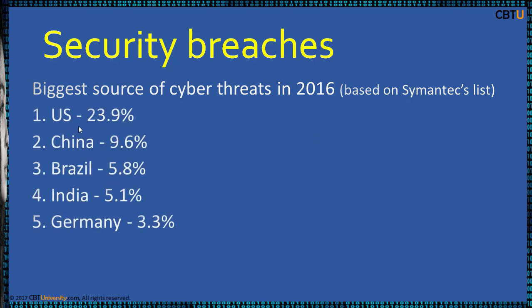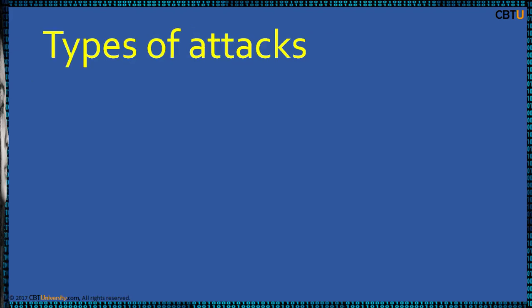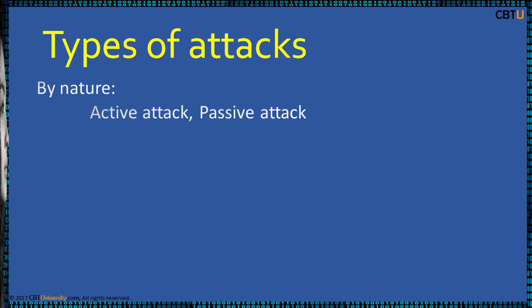The US tops the list, and 50 percent of security breaches happened in five countries. The latest major one being WannaCry ransomware, which affected half a million systems in 150 plus countries. Types of attacks on a target are classified by nature: Active attack and Passive attack. An active attack modifies resources during the attack in a network — examples include spoofing, man-in-the-middle, ARP poisoning, ping flood, ping of death, and smurf attack.